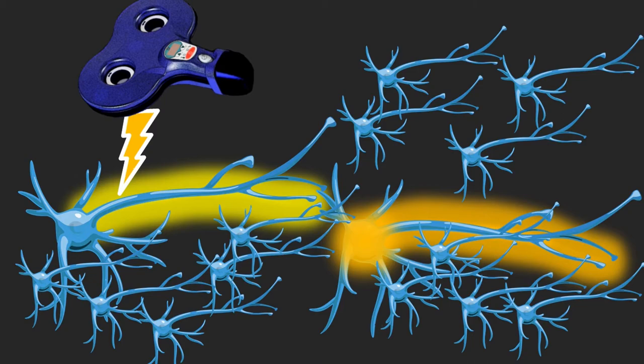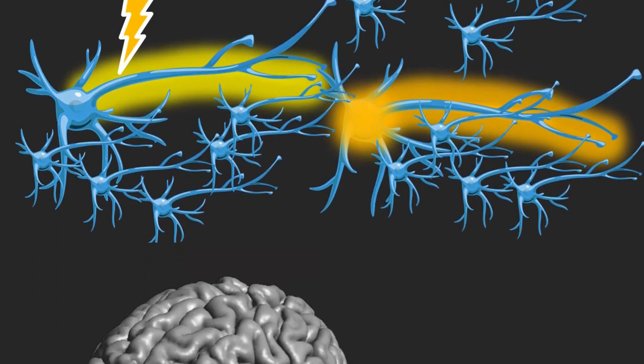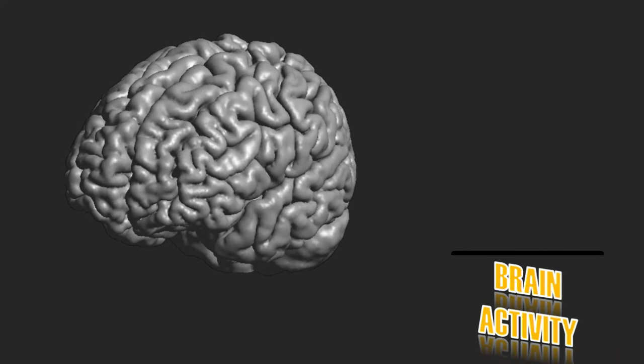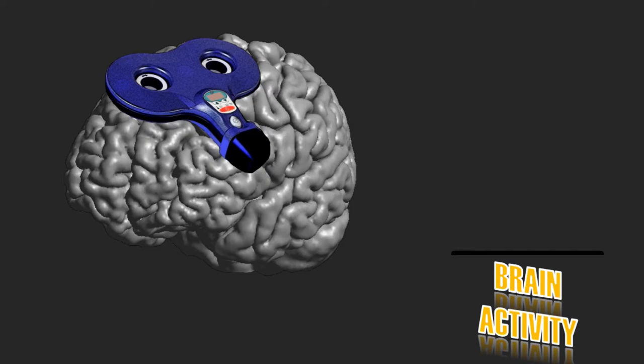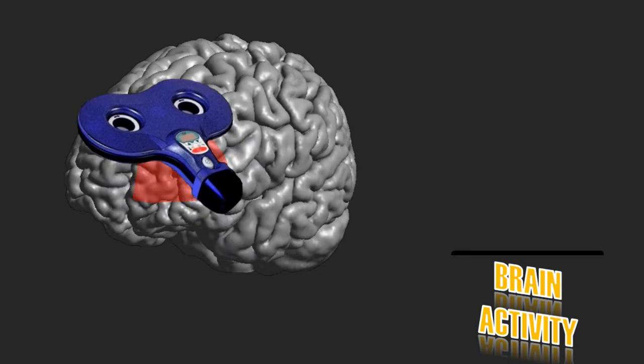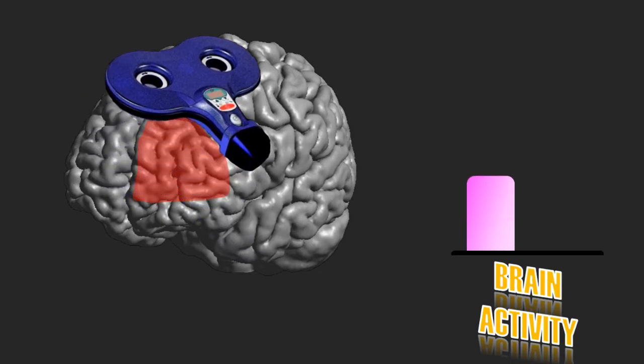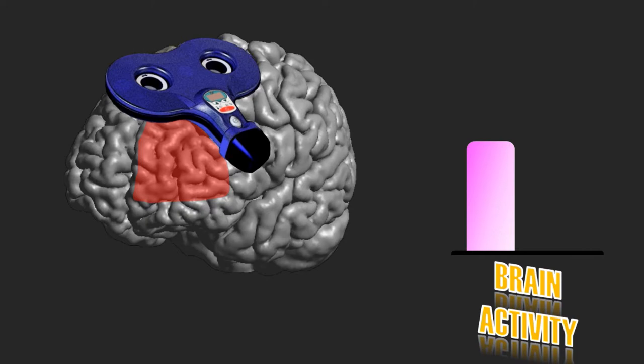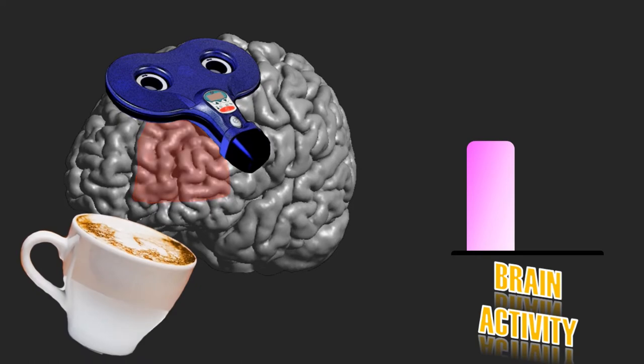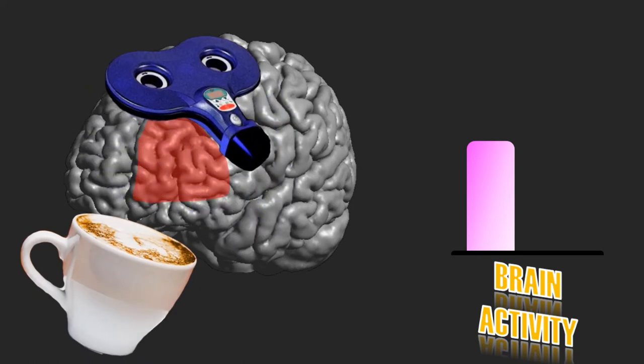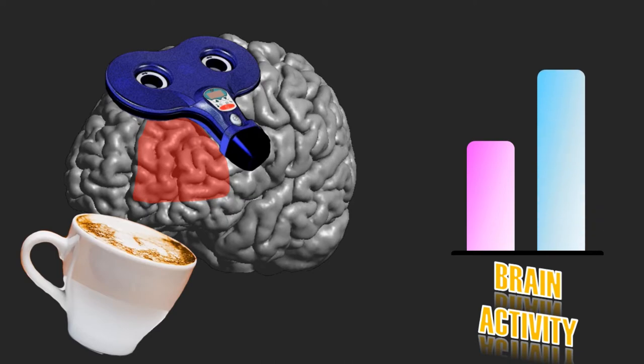So why would that be useful? Well, by sending a TMS pulse to a certain brain area, you can see how easily it gets activated. This is what we call cortical excitability. And this can give us information whether a region of the brain becomes more or less active in a particular situation. You could, for example, look if the brain becomes more active after taking medication, drinking coffee, or after sleeping, and so on.